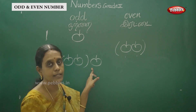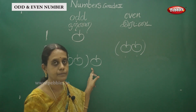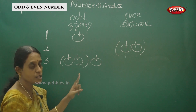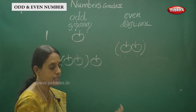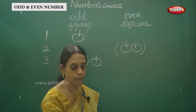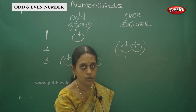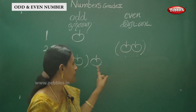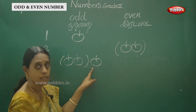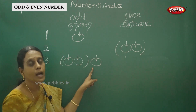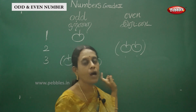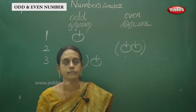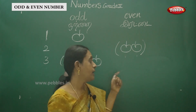One is different — that is odd one out. Two pairs of chapels, one is a pair, one is left alone. That means odd one out — that means odd number.